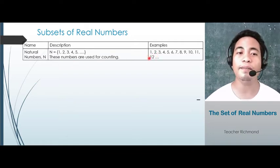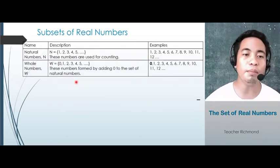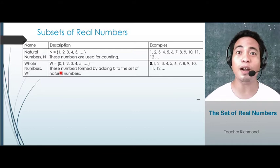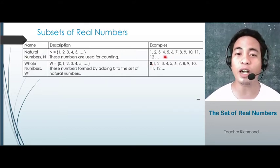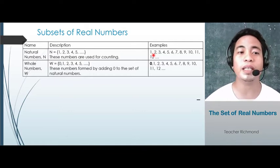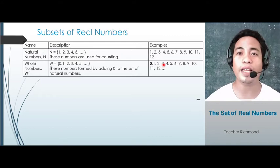The next one, whole numbers. These numbers are formed by adding 0 to the set of natural numbers. If you are going to compare whole numbers to natural numbers, the only difference is just 0. Because natural numbers start with 1, 2, 3, and so on. But in whole numbers, it starts with 0, so we have 0, 1, 2, 3, 4, 5, and so on.